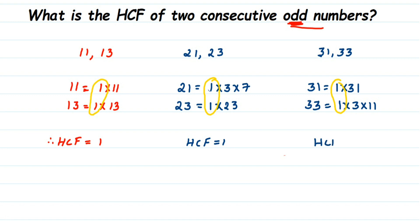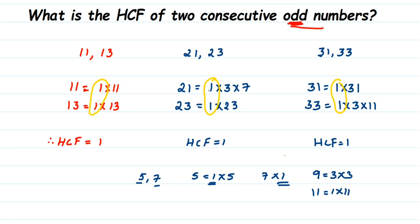If you take any two consecutive odd numbers, the HCF is always 1. For example, 5 and 7 are both prime: 5 = 1 × 5 and 7 = 1 × 7, so the common factor is 1. Similarly, 9 and 11: 9 = 1 × 3 × 3 and 11 = 1 × 11, so 1 is again the common factor. HCF of 9 and 11 is 1.